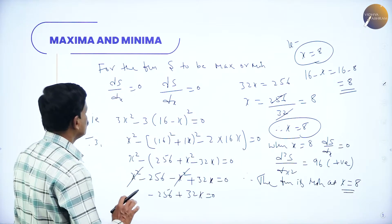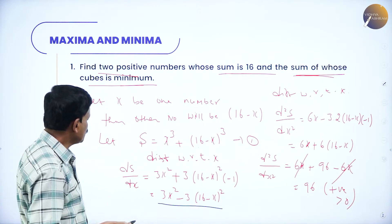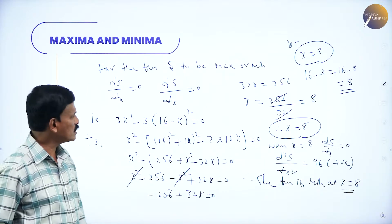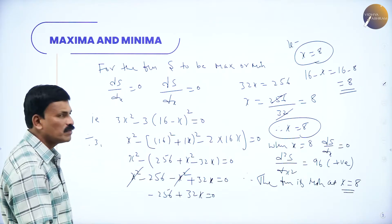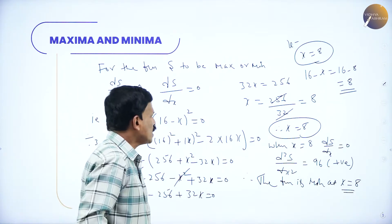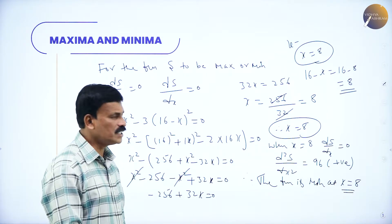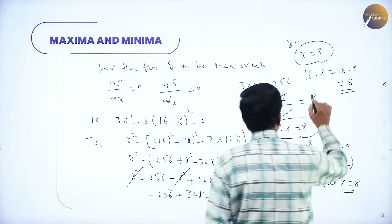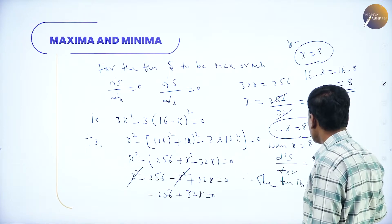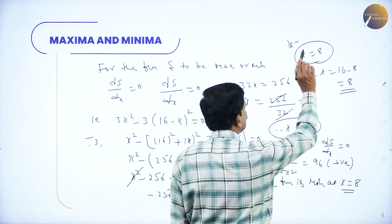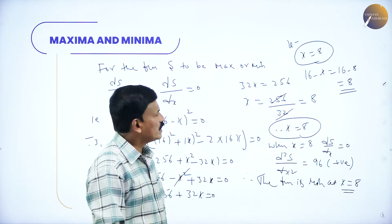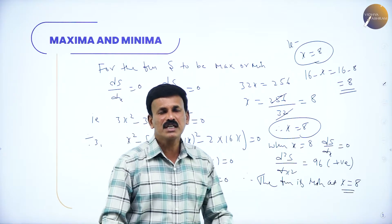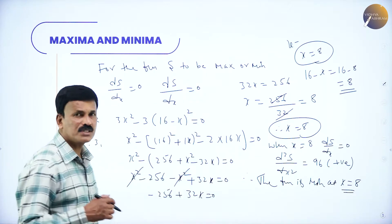To summarize: s equals x³ plus (16 minus x)³. For maxima or minima, ds/dx equals 0 gives 3x² minus 3(16 minus x)² equals 0. Using the (a minus b)² formula and simplifying, x equals 8. Since d²s/dx² equals 96, which is positive, the function is minimum at x equals 8. The two required numbers are 8 and 8.